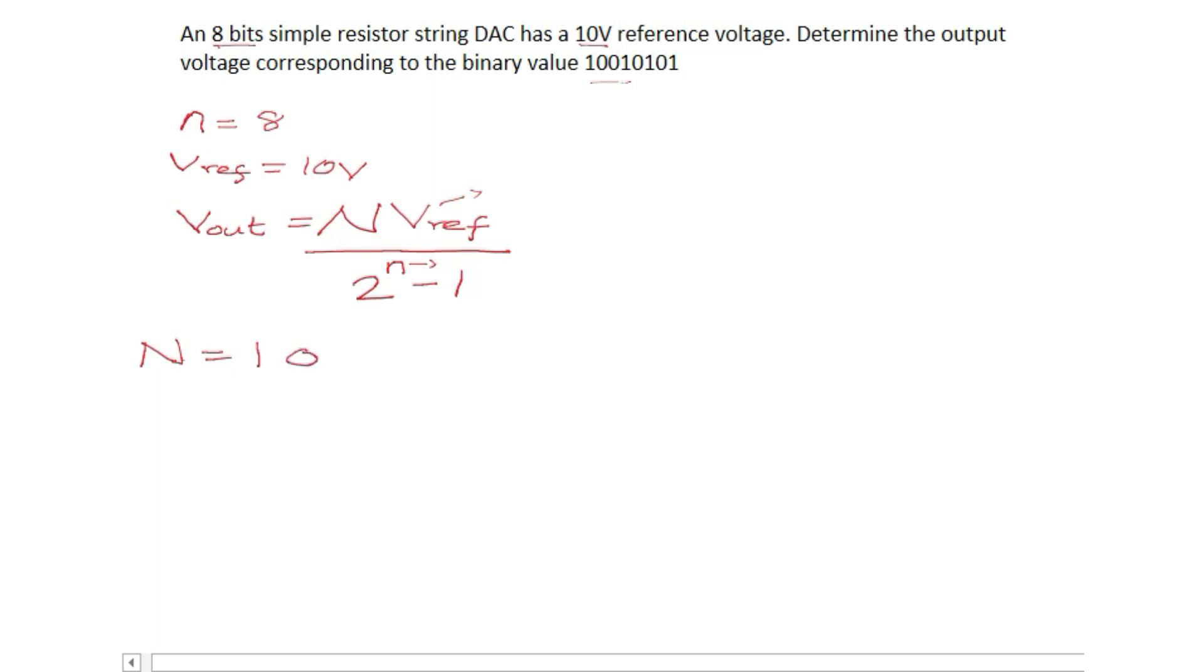Well don't worry, calculator is allowed so you can use that, but let's use the manual method for now. So 10010101, all right, then we know that we're going to start from here which is the LSB and we're going to start with 2 raised to power 0, so as we move ahead the powers of 2 will be increasing.